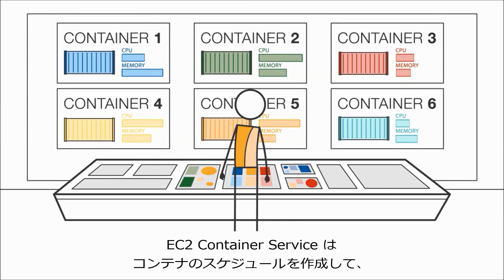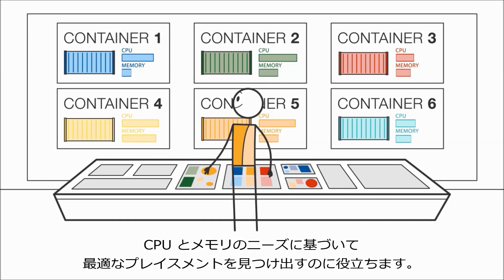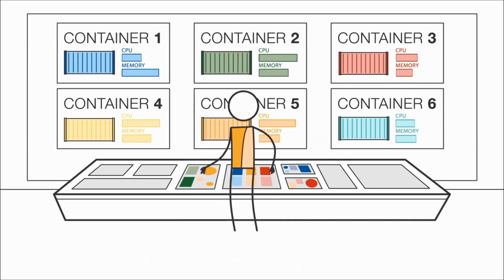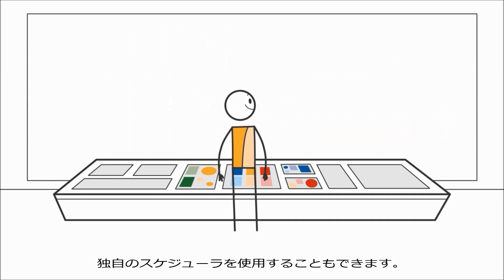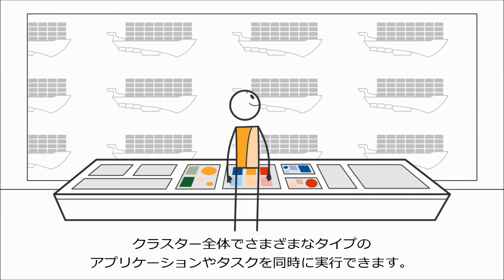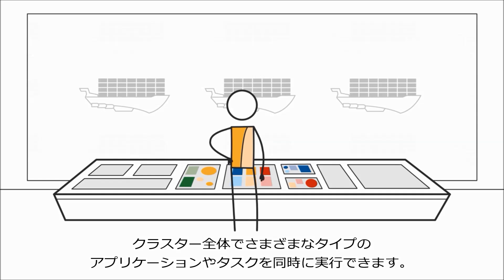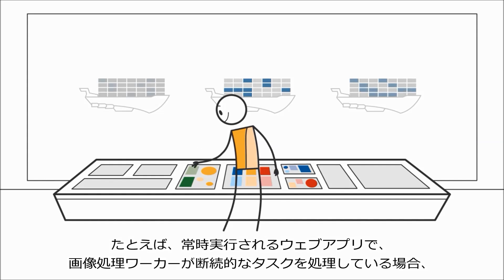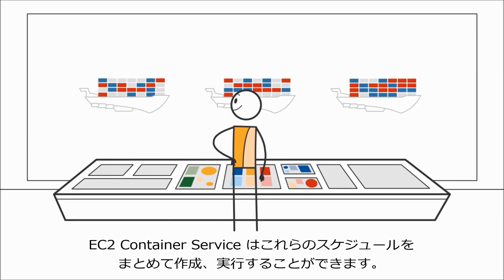EC2 Container Service schedules containers to help find the optimal placement based on your CPU and memory needs. And you can use your own schedulers with EC2 Container Service if you would like. With EC2 Container Service, you can run a mix of different types of applications or tasks across your cluster. For example, you might have a web app that runs all the time and an image processing worker that processes intermittent tasks. EC2 Container Service can schedule and run these together.